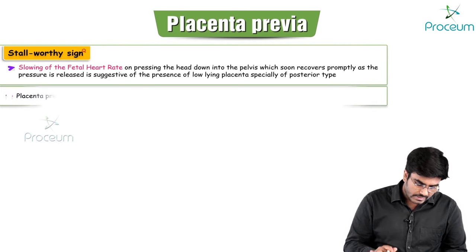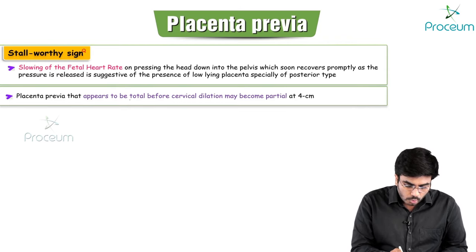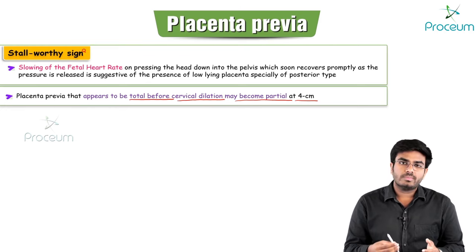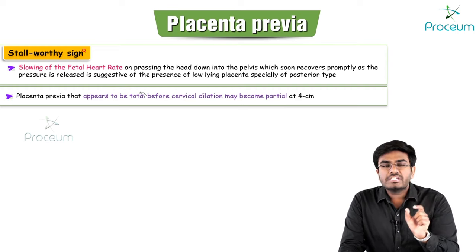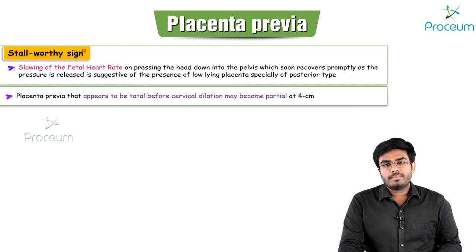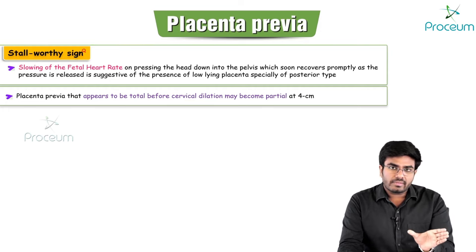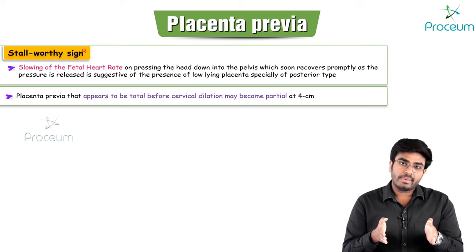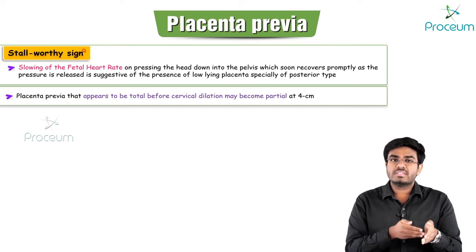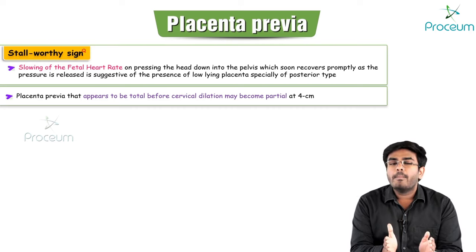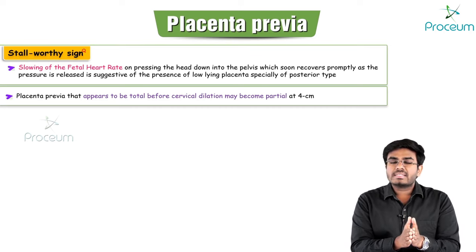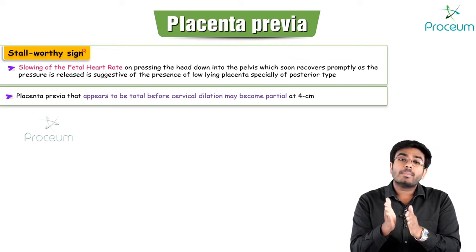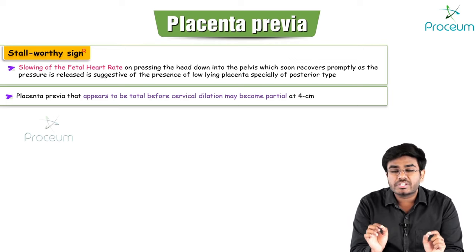An important point: placenta previa that appears total before cervical dilation may become partial at 4 centimeters of cervical dilation. With cervical effacement and dilation, the placenta moves along with the cervix — so a complete placenta previa may become partial. The type of placenta previa can change according to cervical dilation.